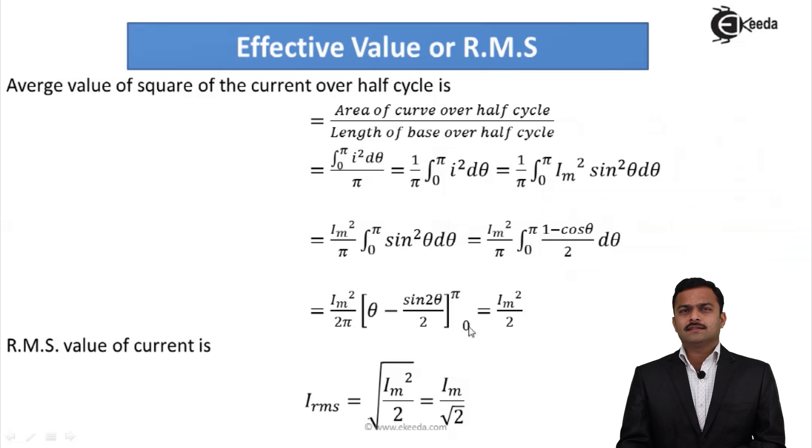If I solve further, what I will get? Average value of square of the current over half cycle is given by area of curve over half cycle divided by length of curve for half cycle. So it gives me integral 0 to π of I² dθ divided by length π. That is ultimately 1 over π. I can take it out: 1/π times integral 0 to π of I² dθ.